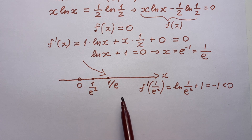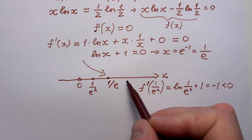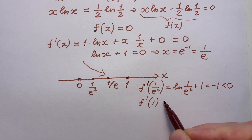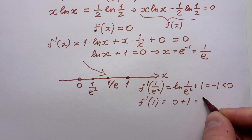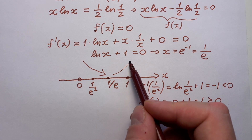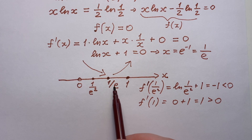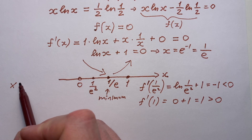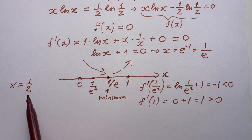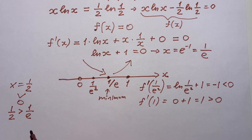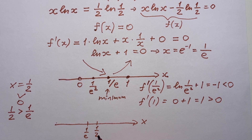Now let's find the value of the derivative to the right of our extremum point. Taking x equals one, the derivative equals zero plus one, which equals one, and it's bigger than zero. So to the right of this point the function is increasing. This means our extremum point one divided by e is a minimum point. We already found one solution x equals one half, and one half is bigger than the extremum point one divided by e. So the function decreases toward the minimum and then increases.